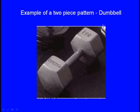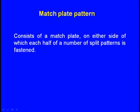Now let us see the match plate pattern. It consists of a metallic match plate on either side of which each half of the split pattern is permanently fastened. In the split pattern the two pieces are always independent, but here we make two pieces and fix the drag pattern to the bottom of a thick metallic match plate and the cope pattern on the other side — they are permanently fastened.